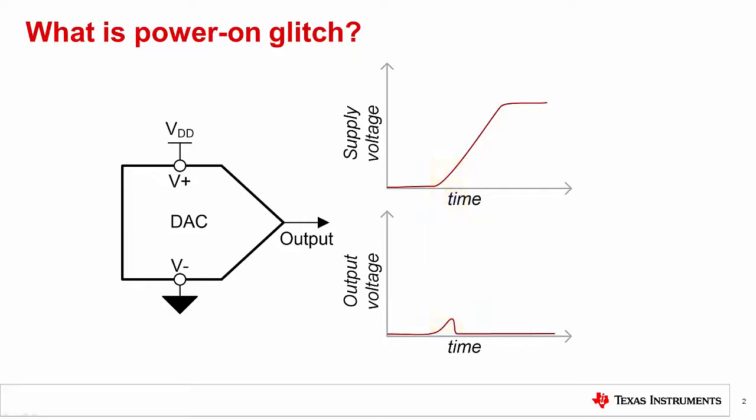Eventually, the supply will reach a high enough amplitude that the output will be asserted to ground. The duration and magnitude of these transients can vary, and are primarily dependent on the DAC's internal output buffer architecture, the slew rate of the power supply, and external parasitics.